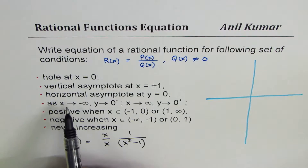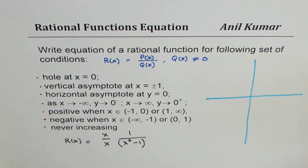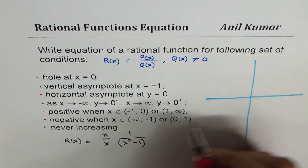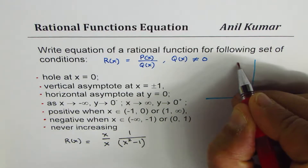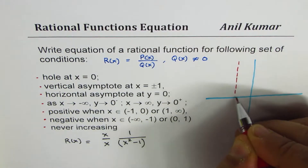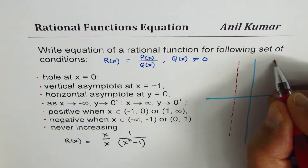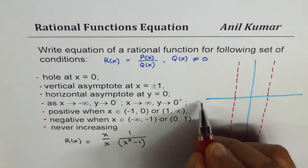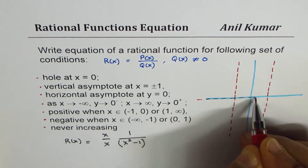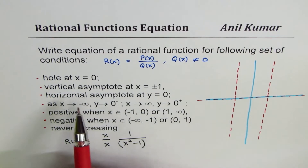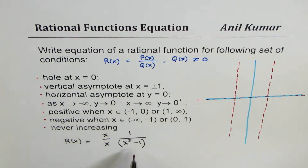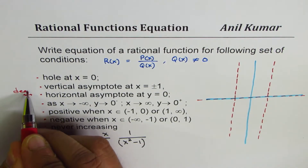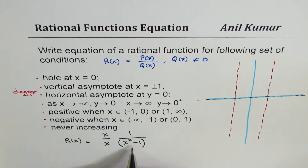The condition of a horizontal asymptote at y equals 0 means the degree of the denominator is higher than the degree of the numerator. Let's place the vertical asymptotes at x = −1 and x = +1 on the graph, and the horizontal asymptote at y = 0. This confirms the degree of the denominator is higher, which is the case so far.